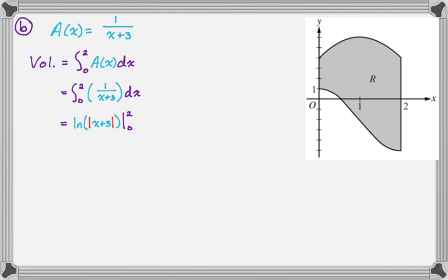the absolute value won't end up mattering in this case because we get all positives. So this is going to be natural log of, when you plug in two, you get the natural log of five minus when you plug in zero, you get the natural log of three. You can leave your answer there, but I like combining logs. So I'm going to write equals the natural log of five over three, and I'm going to leave it there. All right. Let's take a look at part C.